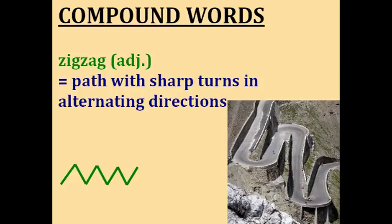Zigzag — this is a fun word to say. Something that is zigzag follows a path with sharp turns in alternating directions. You can see that green line going back and forth. The picture shows a zigzag road.